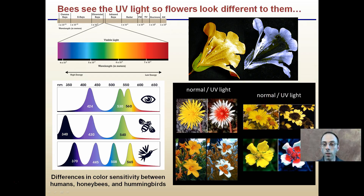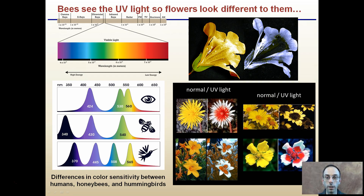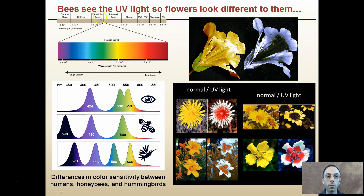Bees and UV light — which is interesting — bees see UV light, so flowers look different to them compared to us. Remember our visible light spectrum: UV is ultraviolet waves. Ultraviolet is over here in our light spectrum, getting closer to x-rays and gamma rays than to infrared or radar waves. It's called ultraviolet because it's beyond the violet spectrum.